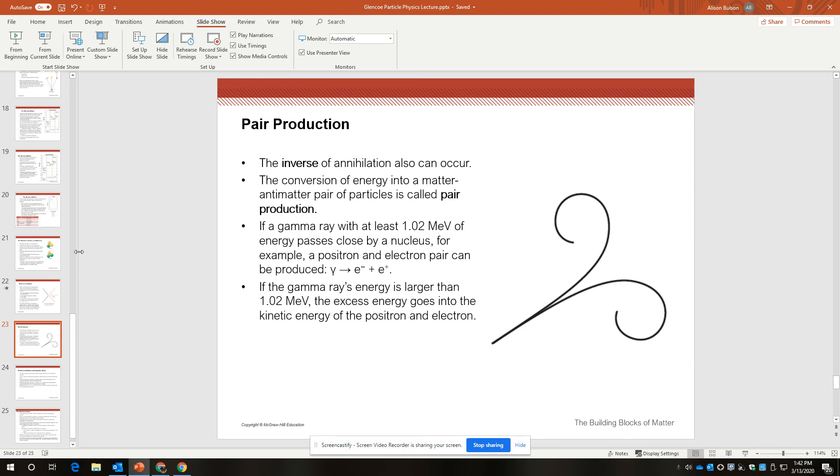So if a gamma ray with at least 1.02 megavolts of energy passes by a nucleus, a positron-electron pair can be produced. If the gamma rays energy is larger than 1.02 megavolts, then the excess energy goes into kinetic energy of the positron and electron.